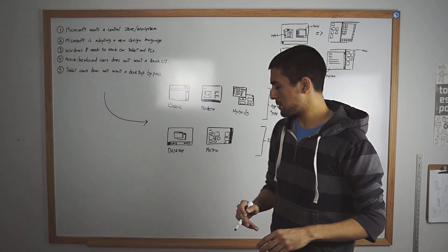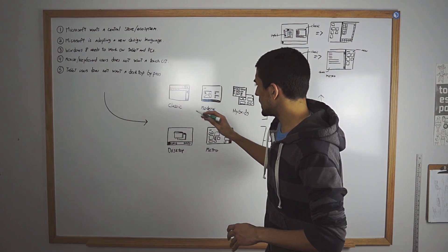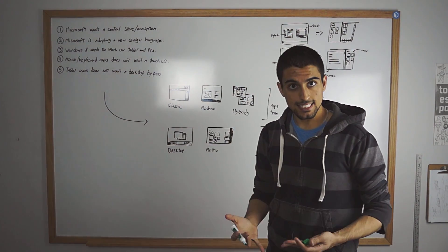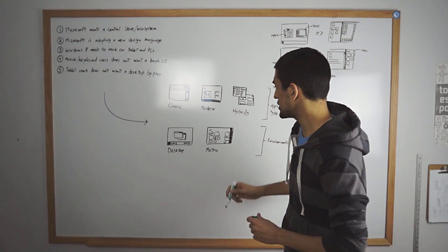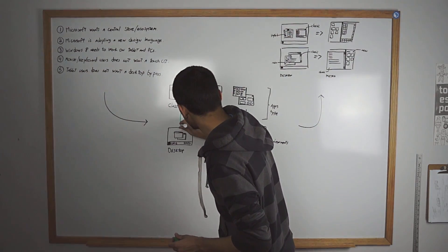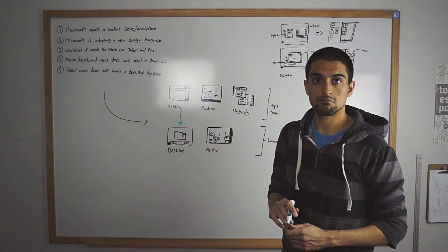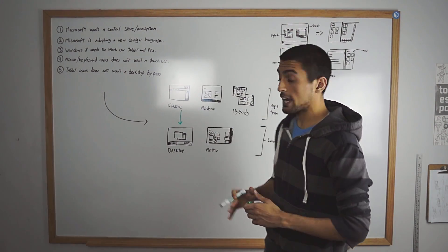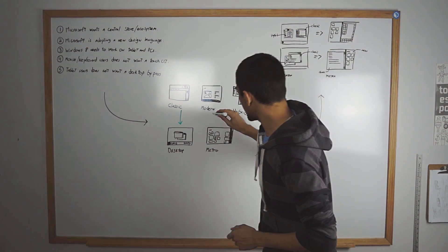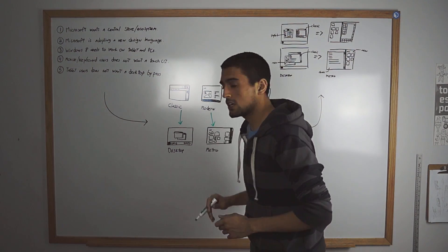So right now what's happening is very simple. When I open a classic application, desktop application, well, the classic application opens on the desktop. When I open a modern application, well, that modern application opens in Metro.